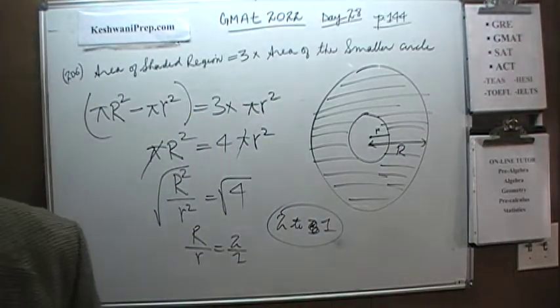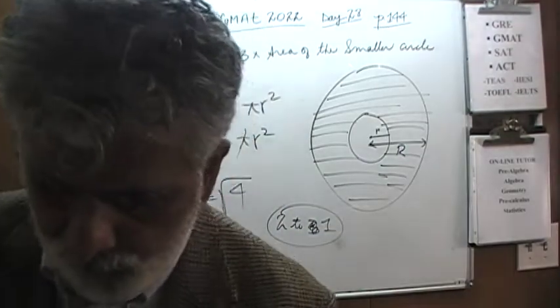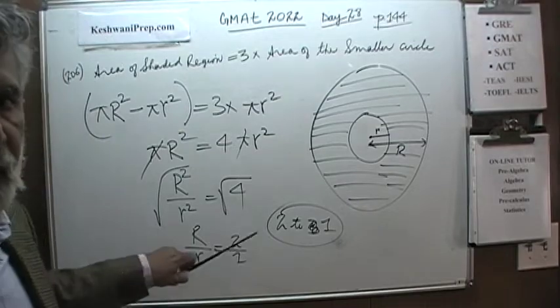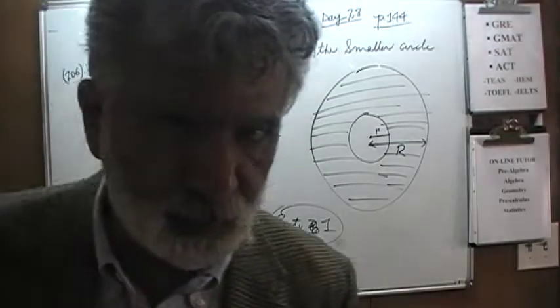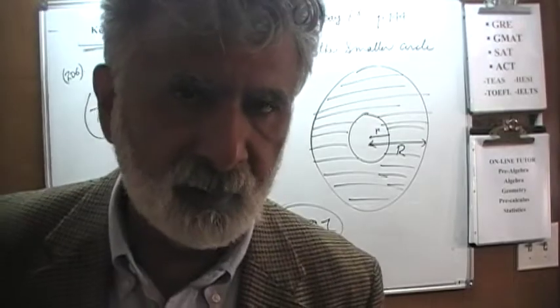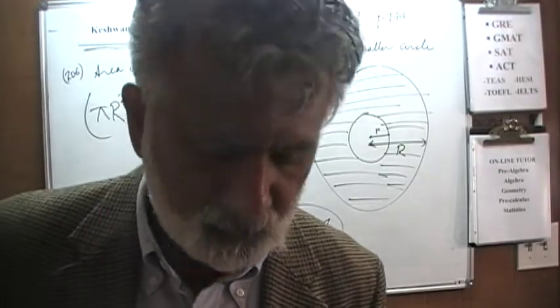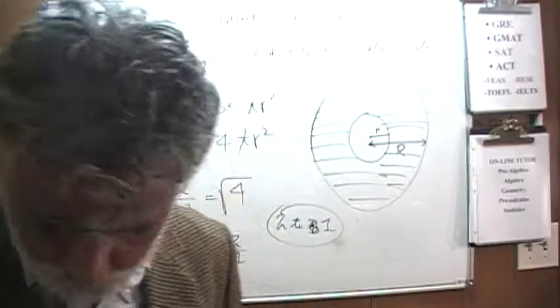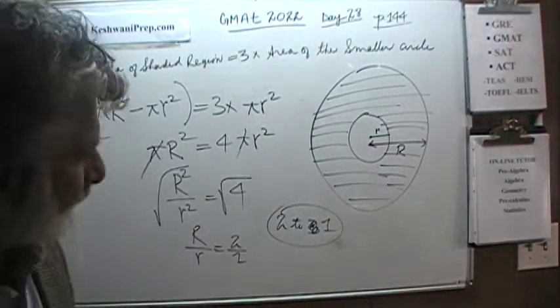Despite the fact that the area of the shared region is 3 times the area of the small circle, the ratio is not 3 to 1, as you might jump to conclude. That's the sucker answer. It's 2 to 1. Let's do the next one.